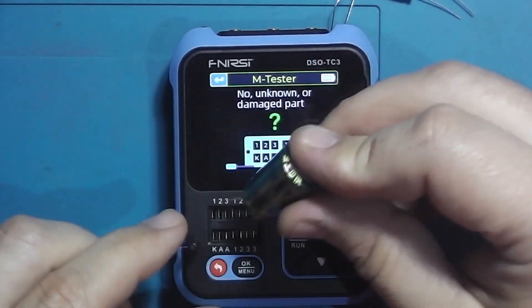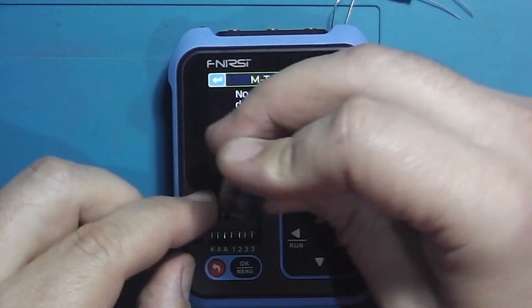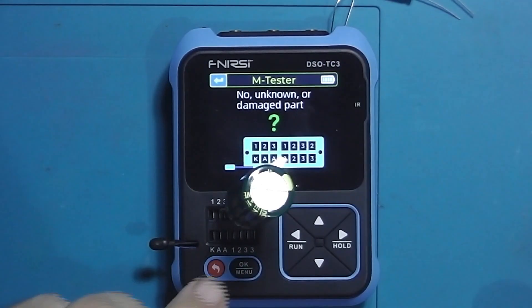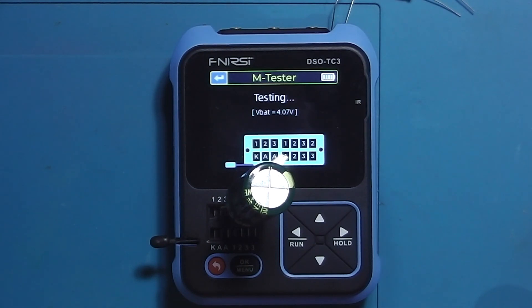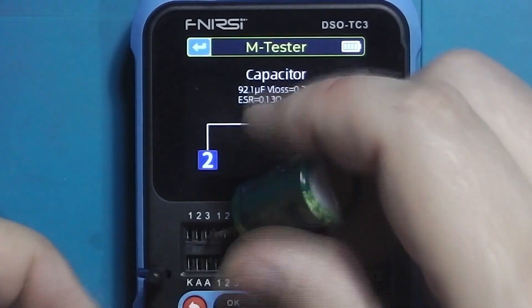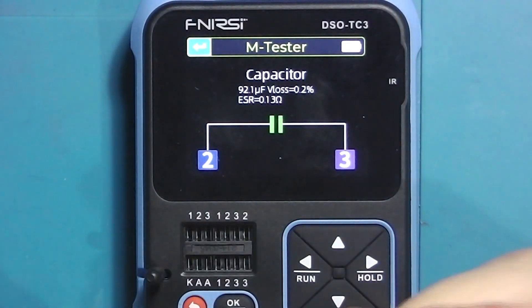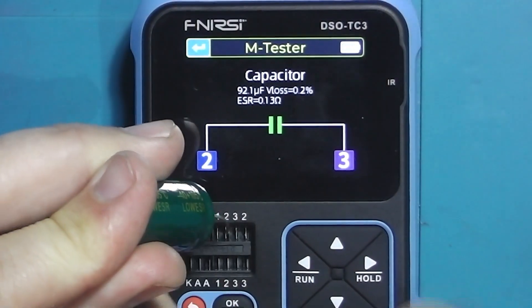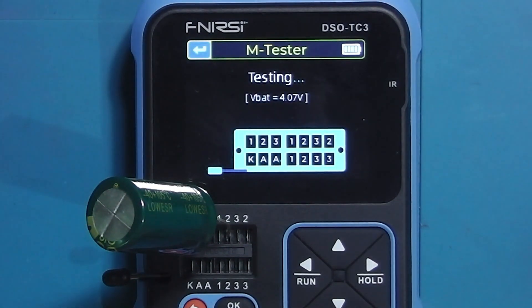Now let's see what the FNRC DSOTC3 says. First, the bigger one. Capacitance is within range, and an ESR of 0.13 ohm is nice. The second one is also good, though the ESR is slightly higher at 0.16 ohm. Still low, but a bit more than the previous.